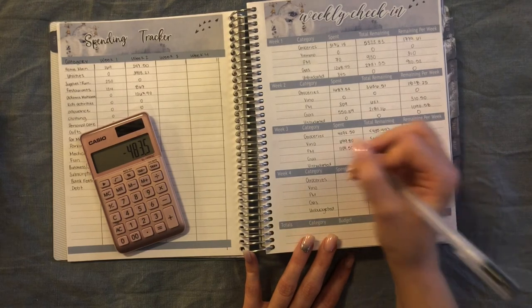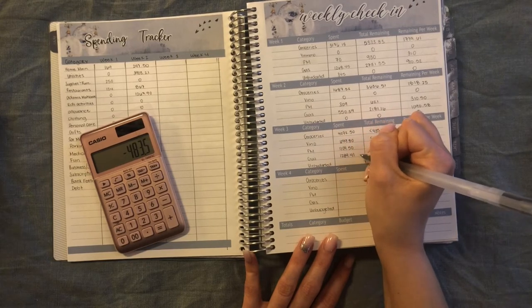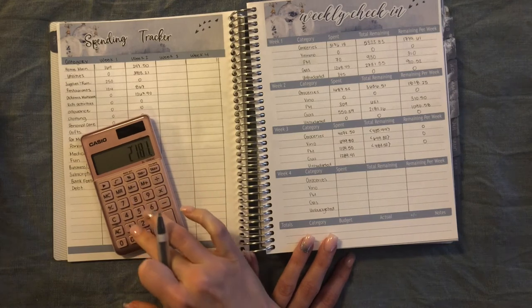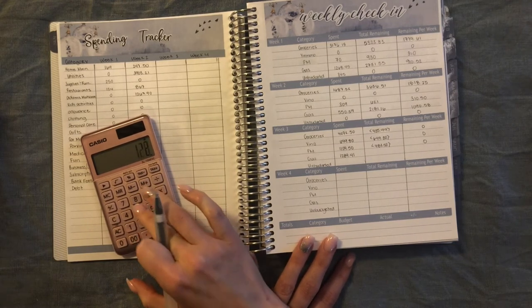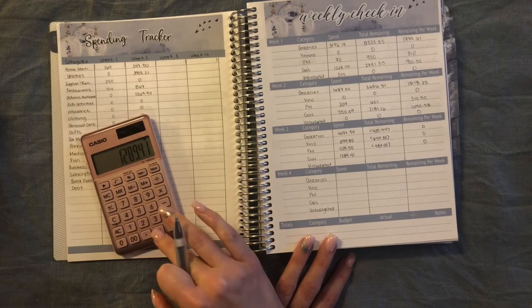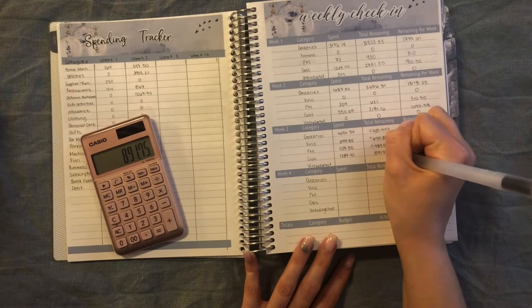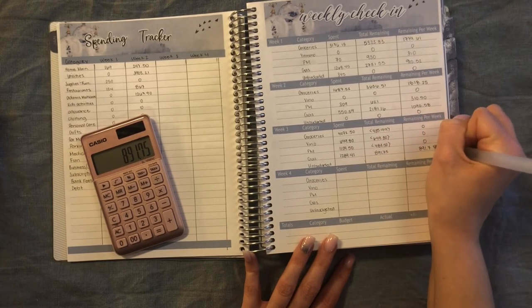For gas, we spent $1,289.41. So we had $2,181.16 minus $1,289.41 equals a balance of $891.75, and that's what we have left for our last week in January.